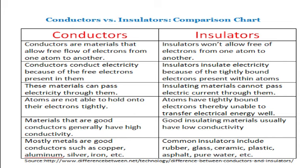For conductors, these materials can pass electricity through them, while insulators cannot pass electric current through them. For conductors, atoms are not able to hold onto their electrons tightly, but for insulators, atoms have tightly bonded electrons and are not able to transfer electrical energy. Materials that are good conductors generally have high conductivity, while good insulating materials usually have low conductivity.